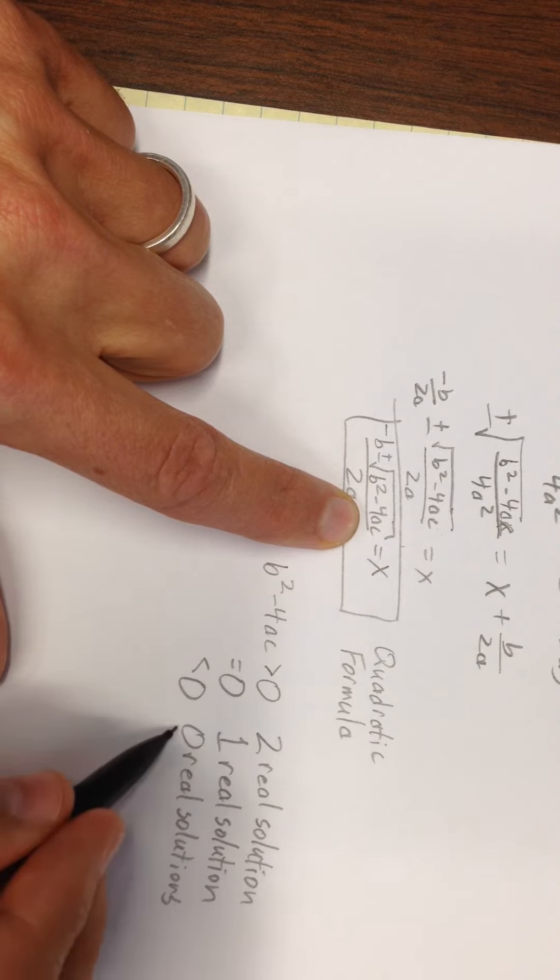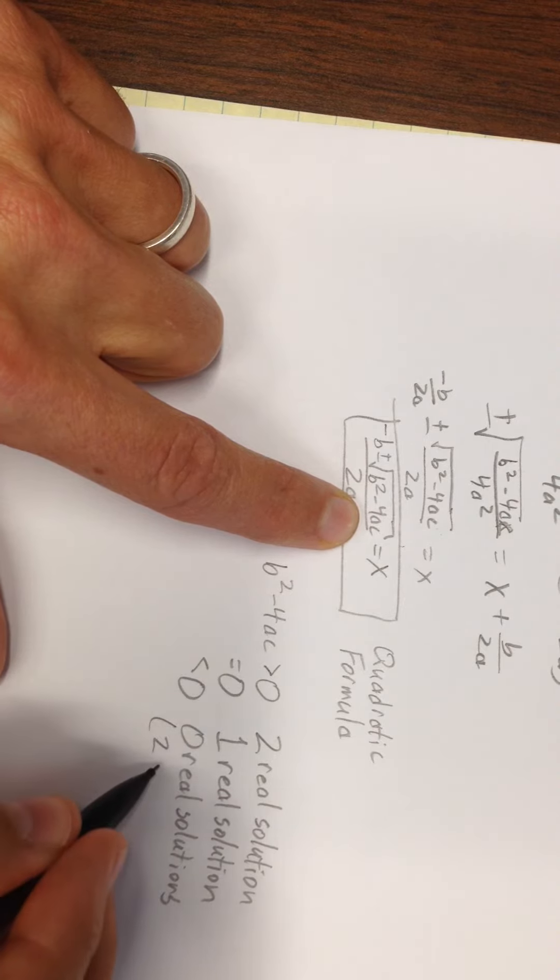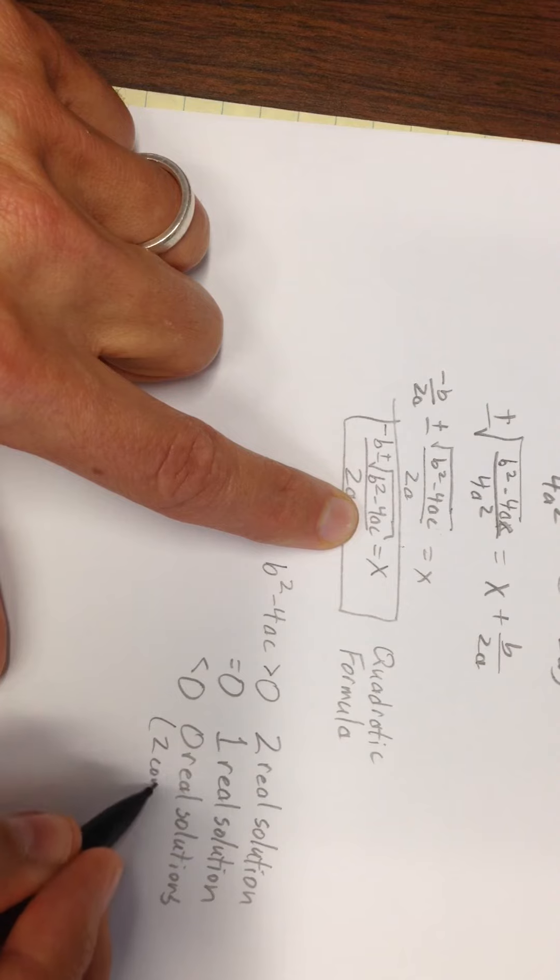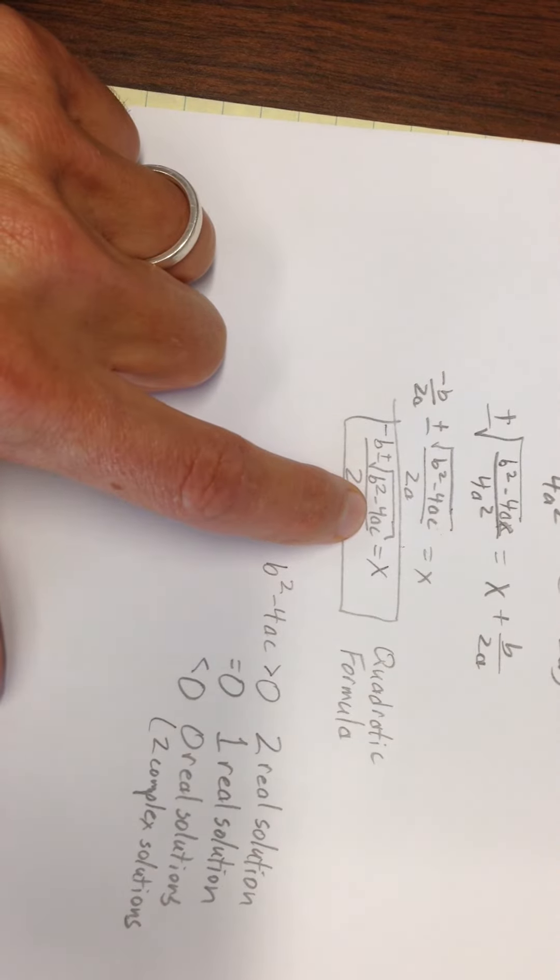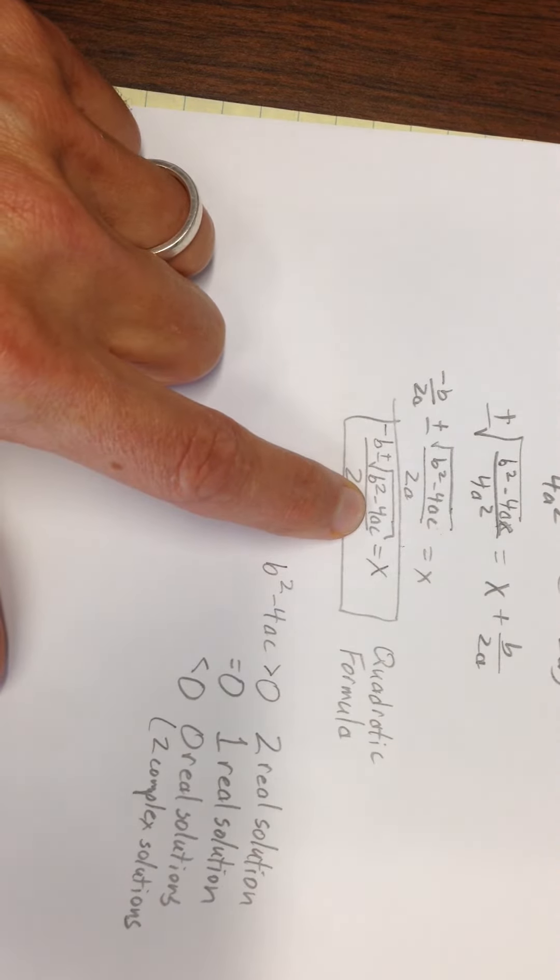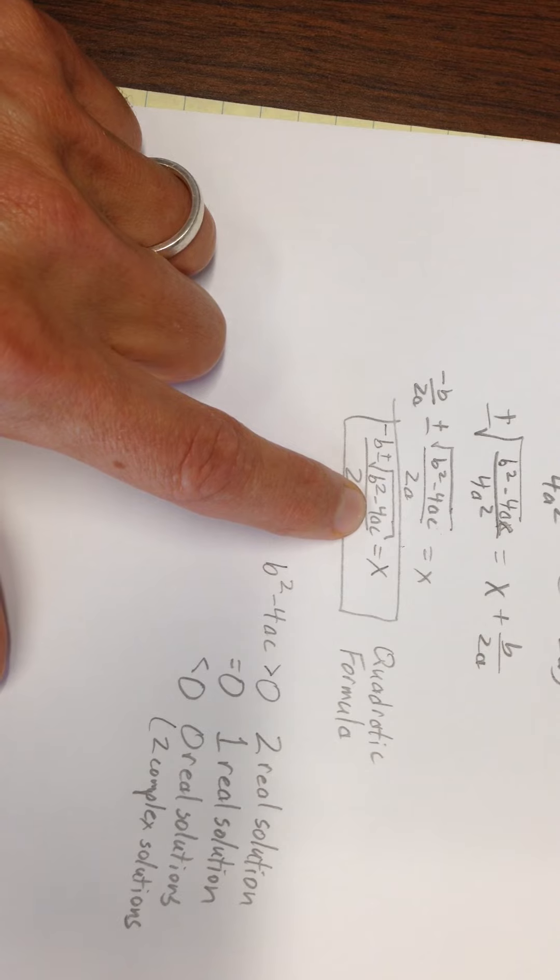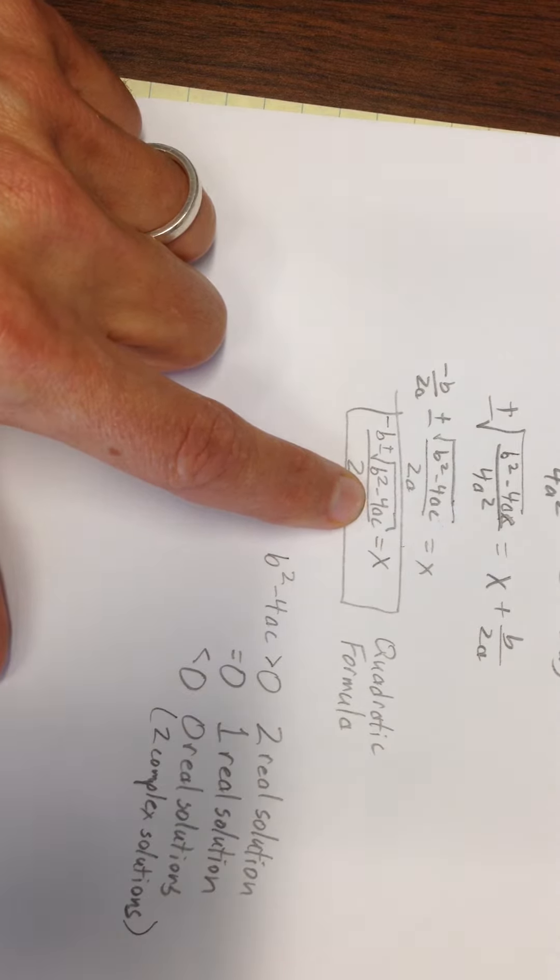or if you want to think about complex numbers, you could say I have 2 complex solutions. So you don't have real solutions, so they don't show up on the x-y coordinate plane, but you do have 2 complex solutions. There you have it.